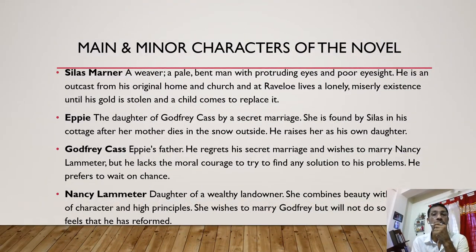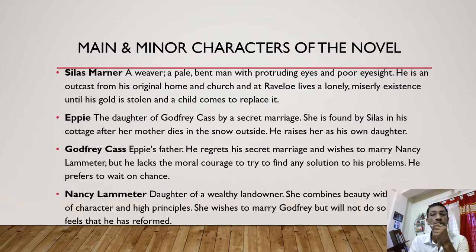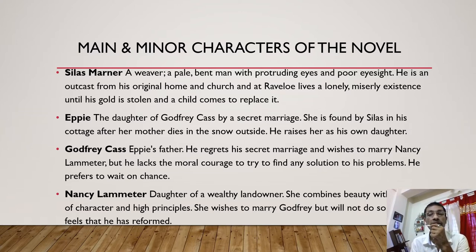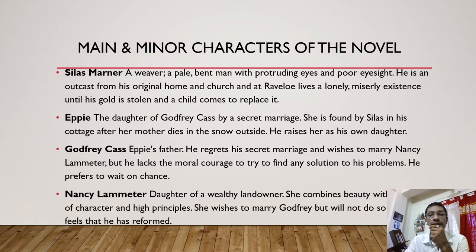The major and minor characters of this novel — there are heaps of characters, but it's not possible to discuss all of them in this short span of time. The major character is Silas Marner, the protagonist — a weaver, a pale, bent man with protruding eyes and poor eyesight. He is an outcast from his original home and church at Lantern Yard, and lives in a lonely, miserly existence until his gold is stolen and a child comes to replace it. Eppie is the daughter of Godfrey, born of a secret marriage. She is found by Silas in his cottage after her mother dies in the snow outside, and he raises her as his own daughter.